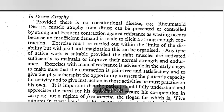In disuse atrophy, there is no constitutional disease — it is controlled by strong and frequent contraction against resistance. Wasting occurs because insufficient demand is made to elicit strong enough contraction. Exercise must be carried out within the limits of disability, but with skill and imagination this can be organized. If we provide any type of active work, we enable those muscles to activate and improve normal strength and endurance.